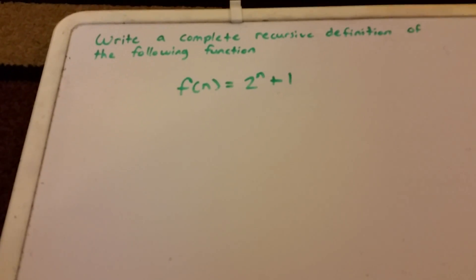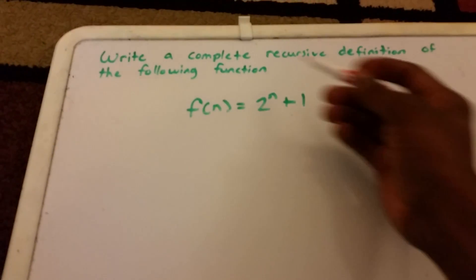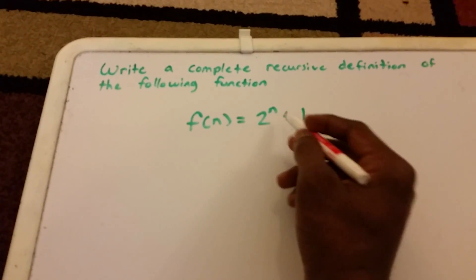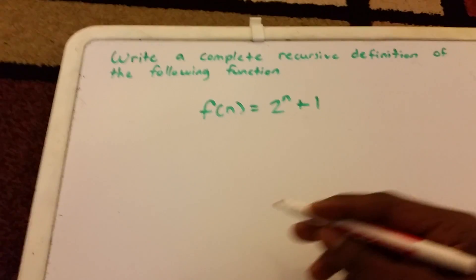Hey guys, in this video we want to write a complete recursive definition of the following function. Our function is f(n) = 2^n + 1.